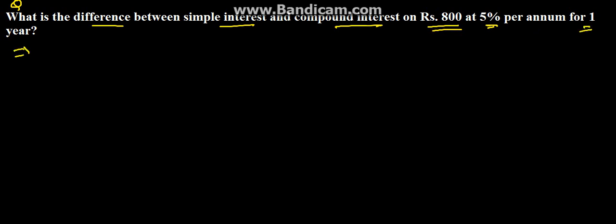We need to find the difference between the simple interest and compound interest. Simple interest here will be Rs. 800 into 5 into 1 upon 100.